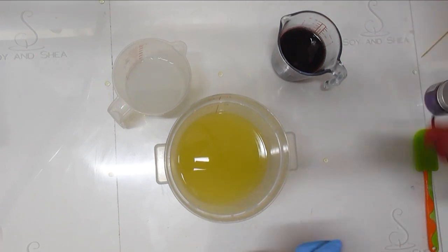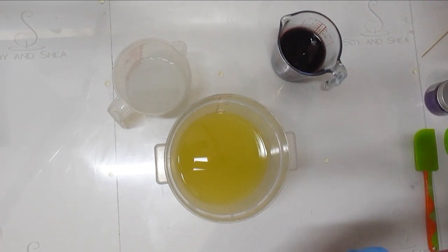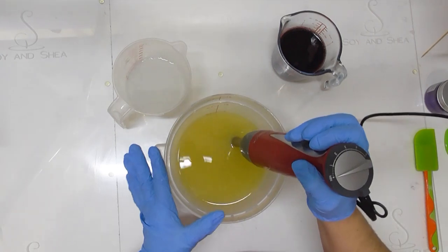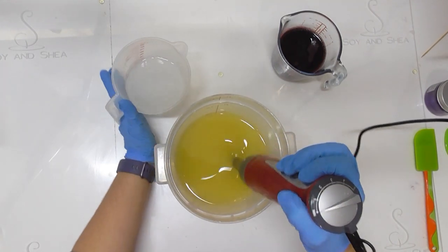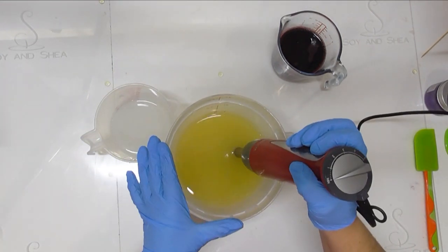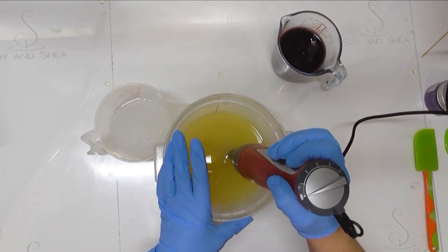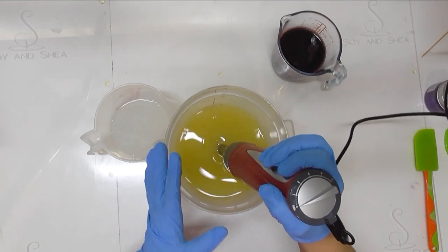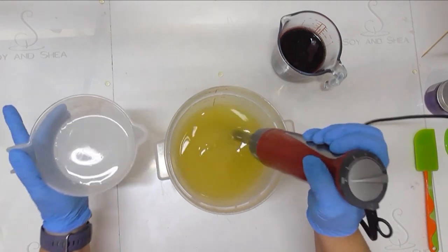What I'm going to start by doing, as I always do, is putting the lye water solution into my oils here. Once I've got that mixed up to emulsion, I'm then going to put the red wine in, mix that in, and then we're going to split it up for some colors for this soap.